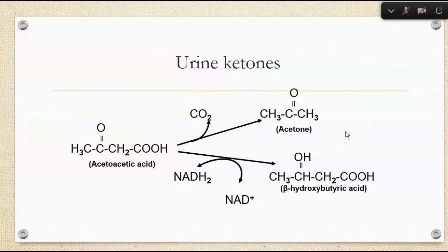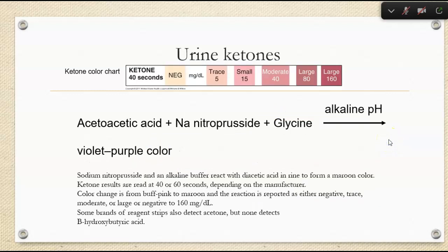The three urine ketones are acetoacetic acid, acetone, and beta-hydroxybutyric acid. We read ketones at around 40 seconds using sodium nitroprusside. The basis of this test is sodium nitroprusside in an alkaline buffer reacting with diacetic acid to form a maroon color. Color change is buff-pink to maroon, reported as negative, trace, moderate, or large — or negative to 160 milligrams per deciliter. Some reagent strips will detect acetone, but none will detect beta-hydroxybutyric acid.